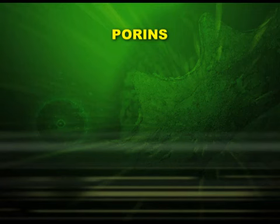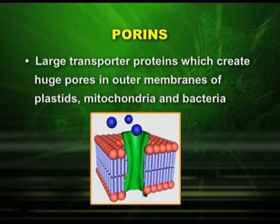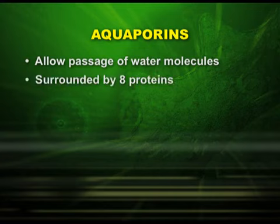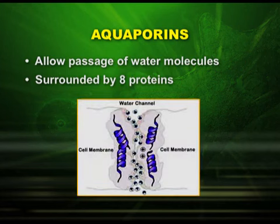Now let us talk about porins. Porins are a type of transport protein which create large pores in the outer membrane of plastids, mitochondria, and bacteria. One type of porin is aquaporins. Aquaporins, as the name indicates, allow passage of water molecules and are surrounded by eight proteins. This picture clearly shows how the water channel is created by aquaporins.